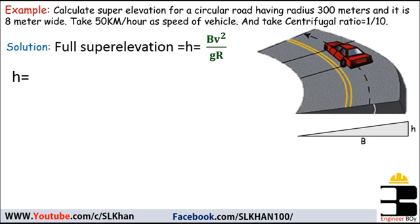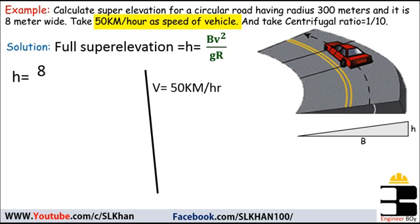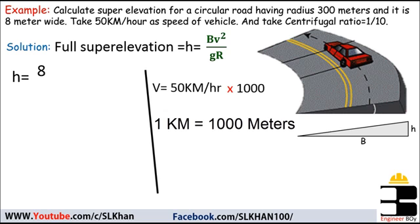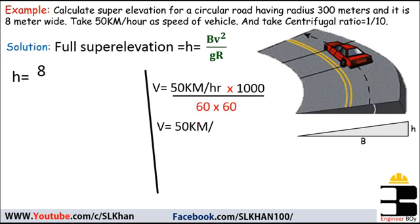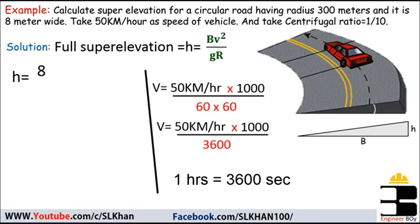So h equals b, which is 8 meters, times v squared, where v is 50 kilometers per hour. This speed must be converted to meters per second because radius, road breadth, and acceleration are all in meters. To convert 50 km/h to m/s, multiply by 1000 and divide by 3600, giving a speed of 13.89 meters per second.